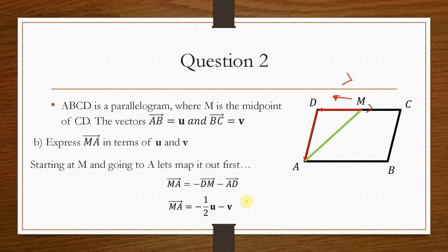And that's how you would go about solving two-dimensional vector pathways. It's very straightforward — you just need to ensure you know your starting position and your end position. Map it out, draw diagrams, illustrate them on a piece of paper with a pen or pencil, and get used to playing about with the diagrams. That's the best piece of advice we can possibly give.